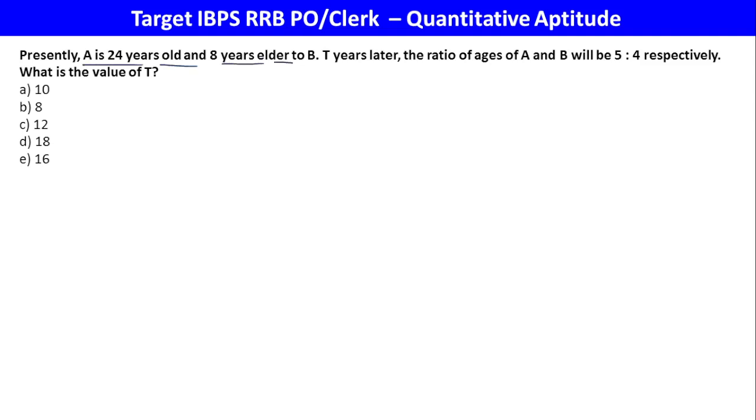Presently A is 24 years, B is 8 years elder, so B is 16. The ratio is 3:2 with difference of 8 years. T years later, the ratio becomes 5:4, which means 2 parts increment. Two parts equal 16 years, so one part is 8 years. Therefore 16 years is the answer. Option E is correct.